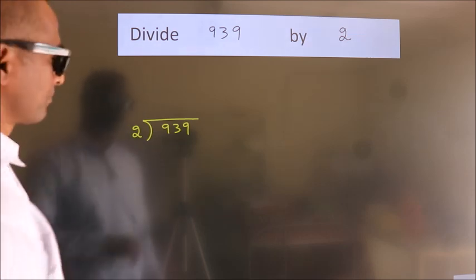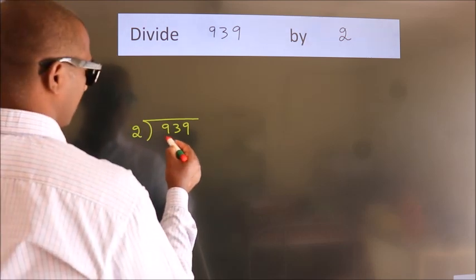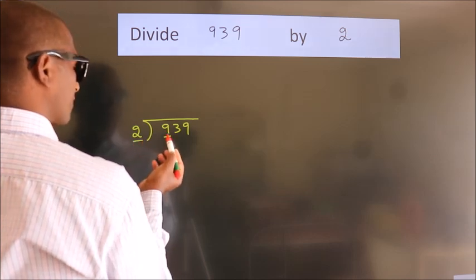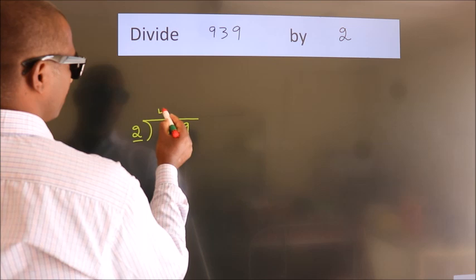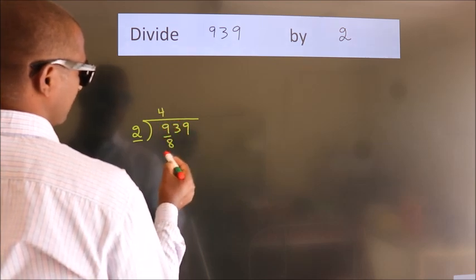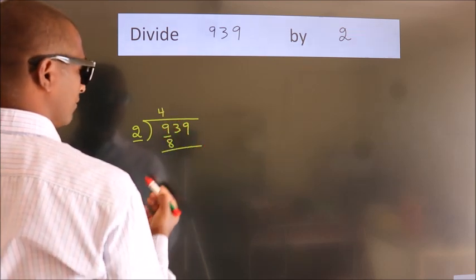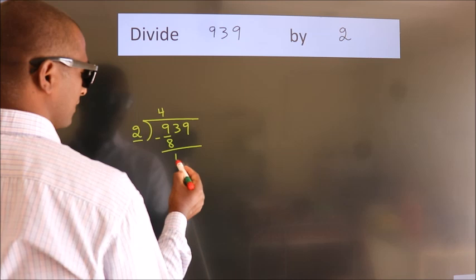Next, here we have 9, here 2. A number close to 9 in the 2 table is 2 fours are 8. Now we subtract and get 1.